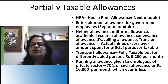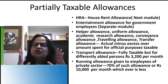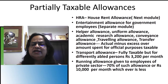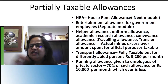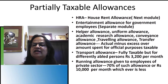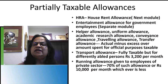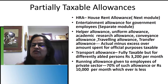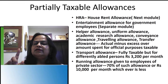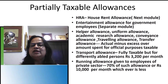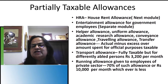Running allowance is given to private sector employees, particularly those in marketing jobs who travel extensively throughout districts and states. The exemption is: 70% of the allowance received, or Rs. 10,000 per month, whichever is less. For example, if they receive Rs. 10,000, 70% is Rs. 7,000, which would be exempted. If they receive Rs. 14,000, you calculate 70% of Rs. 14,000 (Rs. 9,800) versus Rs. 10,000, and whichever is less is the exempt amount.